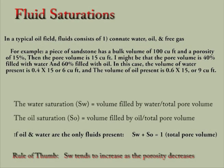In a typical oil field, fluids consist of connate water, oil, and free gas. For example, a piece of sandstone has a bulk volume of 100 cubic feet and a porosity of 15 percent, giving a pore volume of 15 cubic feet. If the pore volume is 40 percent filled with water and 60 percent filled with oil, then the volume of water is 0.4 × 15 = 6 cubic feet, and the volume of oil is 0.6 × 15 = 9 cubic feet.